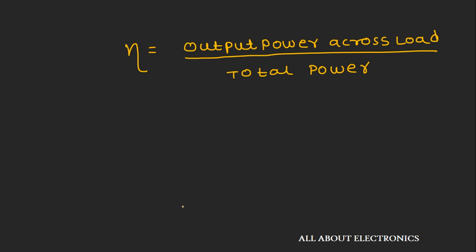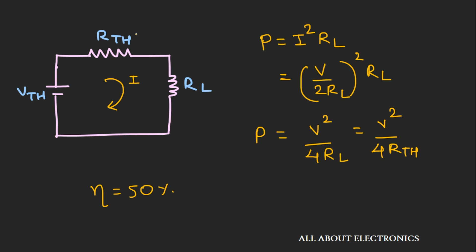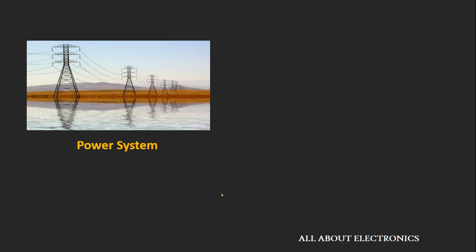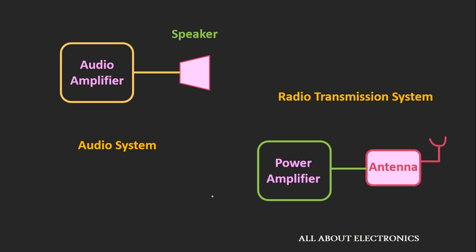The efficiency is the output power across the load divided by the total power. The power across the load resistance is I²·RL, and total power is 2·I²·RL, giving only 50% efficiency. This maximum power transfer theorem is not used in applications where efficiency is the primary concern, like power systems. But in cases where output power matters more than efficiency — such as audio systems, radio transmission, or communication systems — this theorem is used.